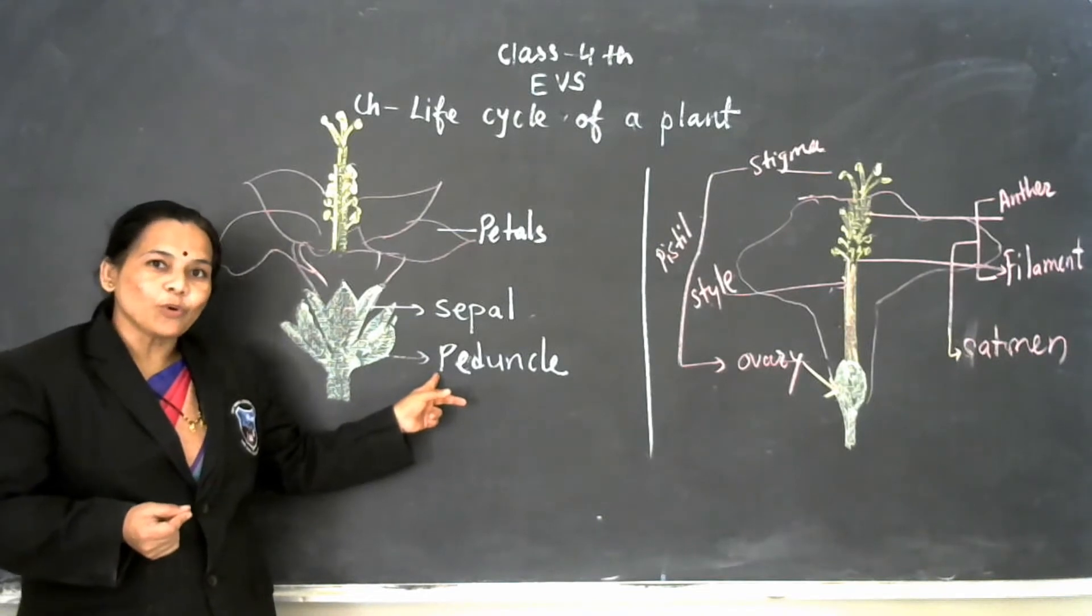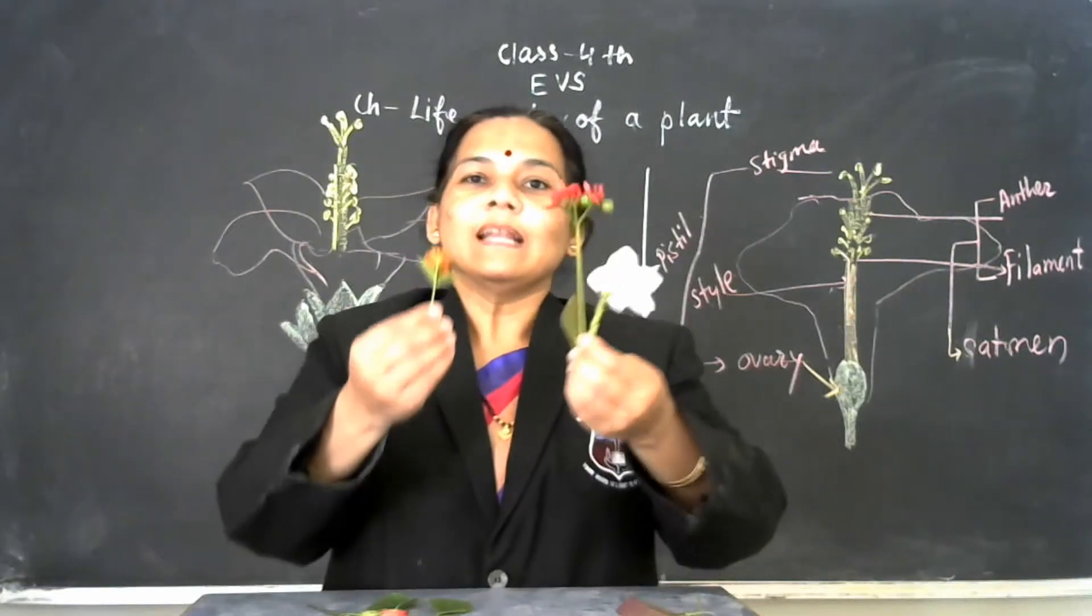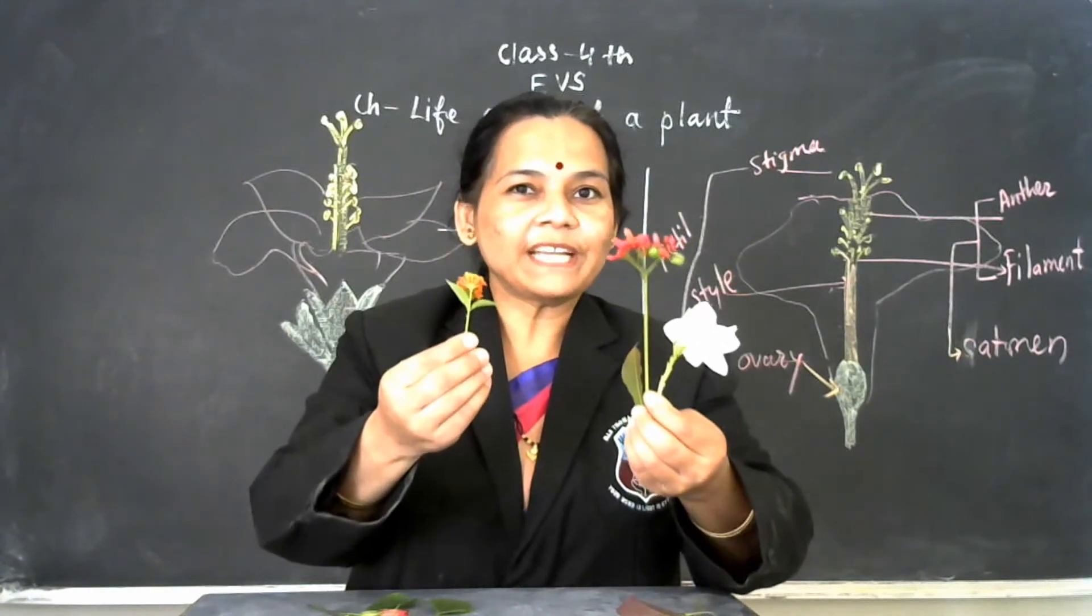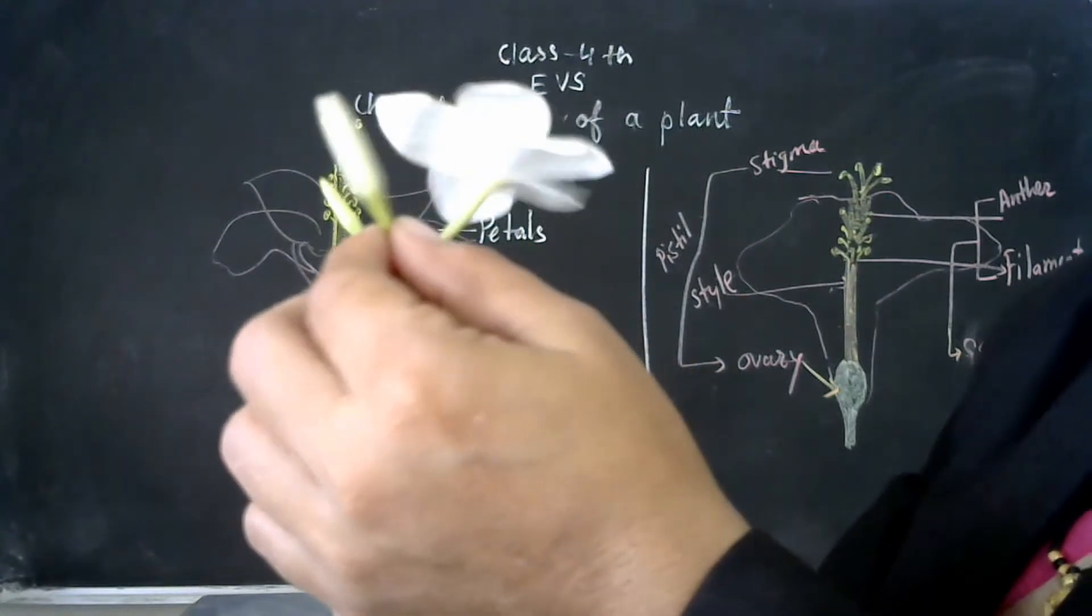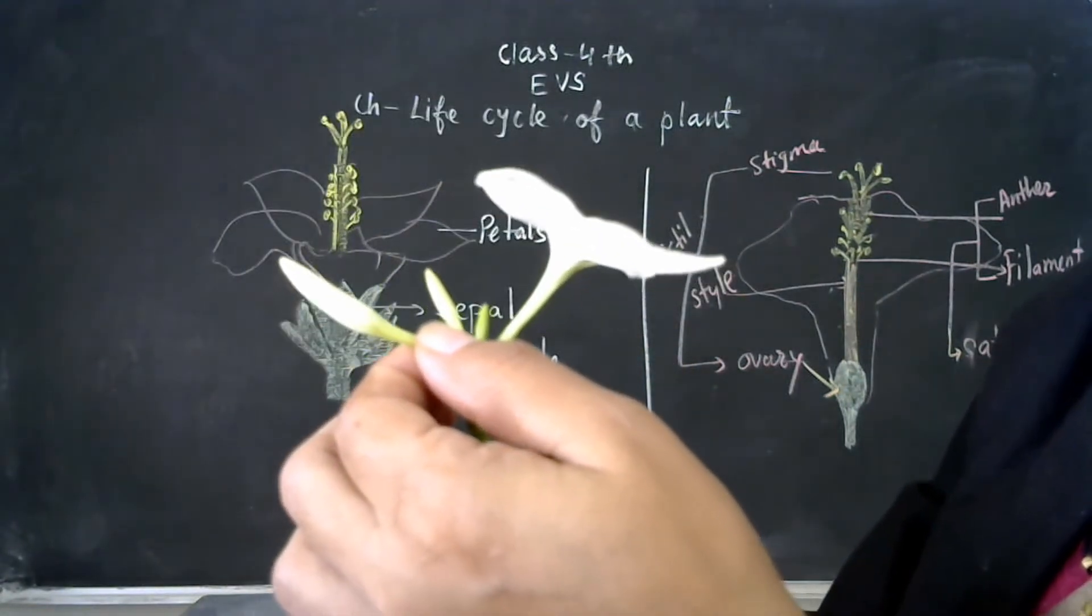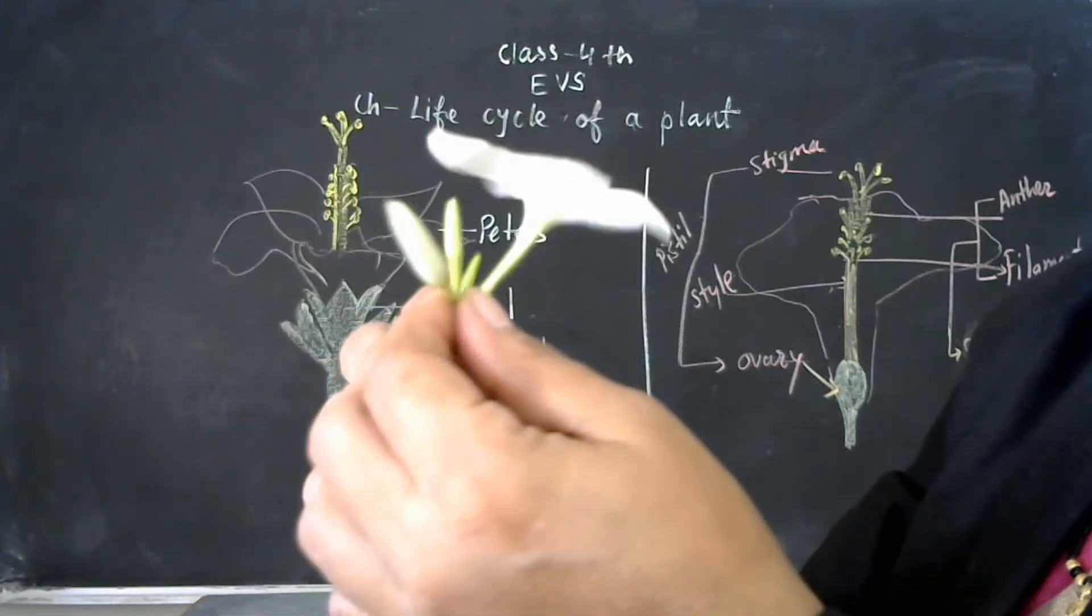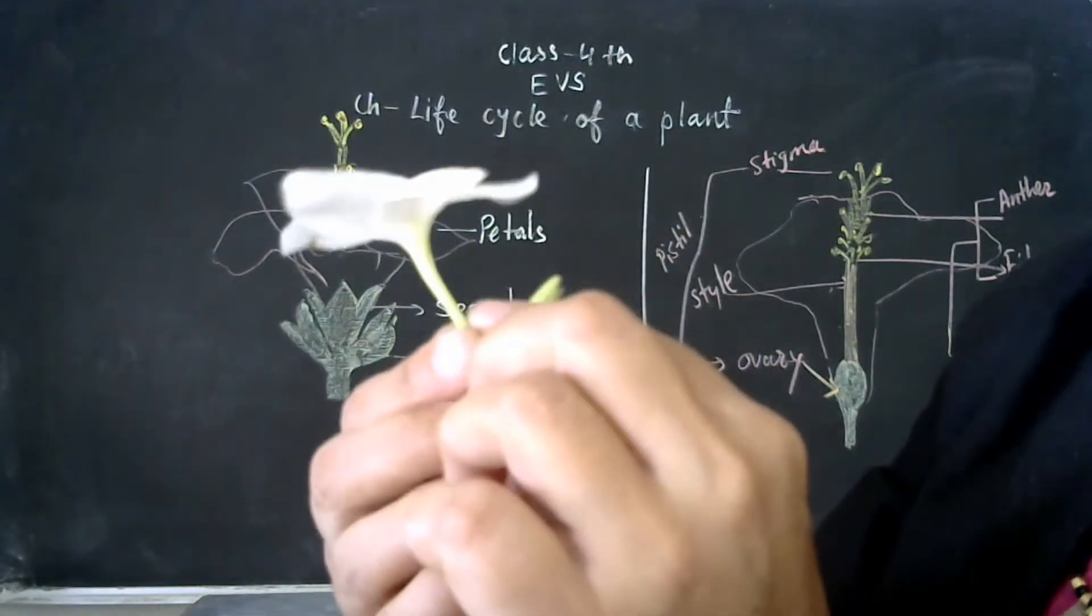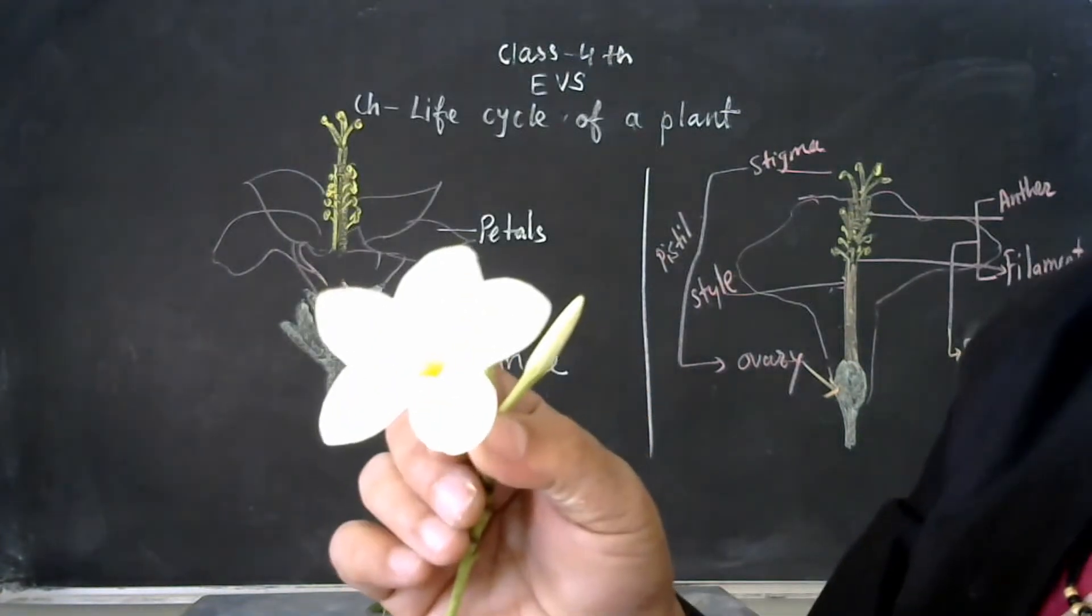Now I am going to show you some flowers. Let us see some different types of flowers. Can you see this bud? This bud is known as baby flower. And after maturation, when this bud grows, it looks like a beautiful flower.